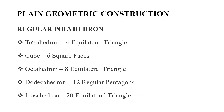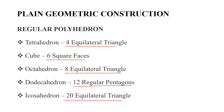Next, we will study plane geometry construction figures. The first category is regular polyhedra. A tetrahedron has 4 equilateral triangles. A cube has 6 equal faces. An octahedron has 8 equilateral triangles. A dodecahedron has 12 regular pentagons. An icosahedron has 20 equilateral triangles.